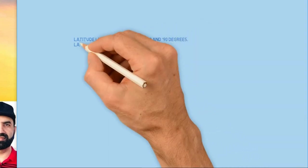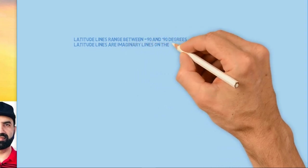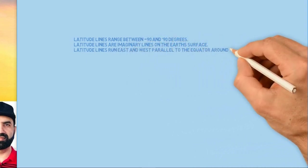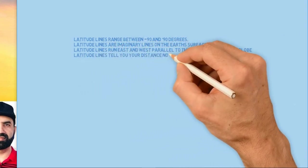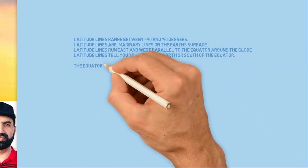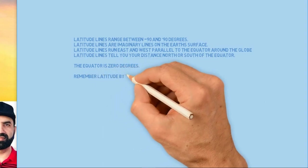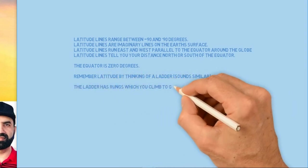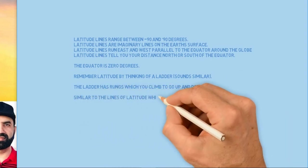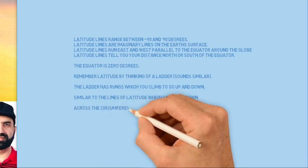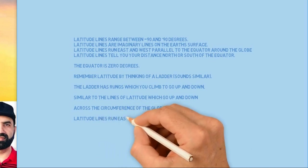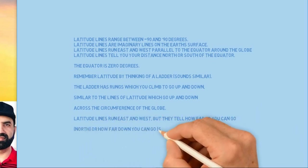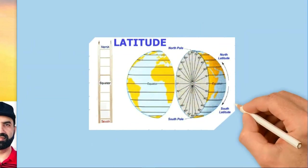Latitude lines range between minus 90 and plus 90 degrees. These latitude lines are imaginary lines on the earth's surface and they run east and west parallel to the equator around the globe. The equator is zero degrees. Remember latitude by thinking of a ladder—sounds similar. The ladder has rungs which you climb to go up and down, similar to the lines of latitude which go up and down. Here is an example of latitude with the ladder.